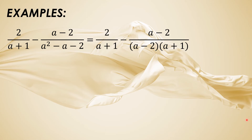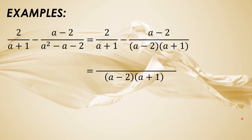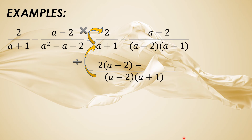Next, let us find the LCD of (a plus 1) and the two binomials. Since merong (a plus 1) na dito sa ating unang rational expression, katulad ng nasa pangalawang expression, ang magiging LCD na lamang ay (a minus 2)(a plus 1). Then let us divide this resulting denominator by (a plus 1) — kapag nagdi-divide tayo, pwede lang nating i-cancel ang same terms. So ang matitira ay (a minus 2). Then imumultiply natin yun sa numerator. So 2 times (a minus 2) — hindi muna natin imumultiply ang 2 sa (a minus 2) yet.